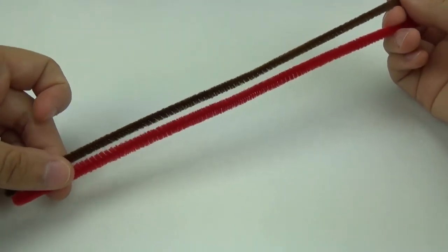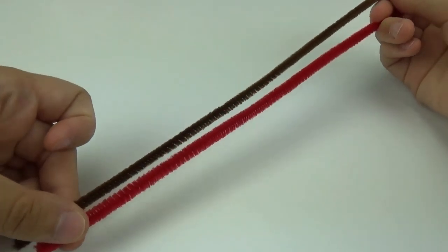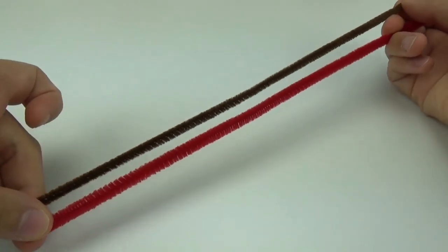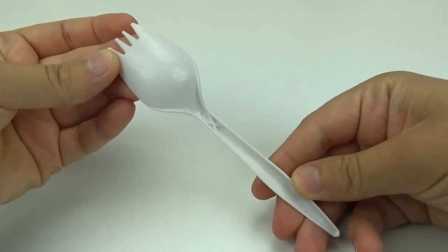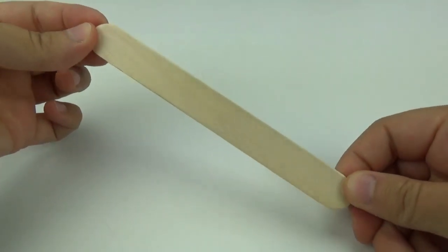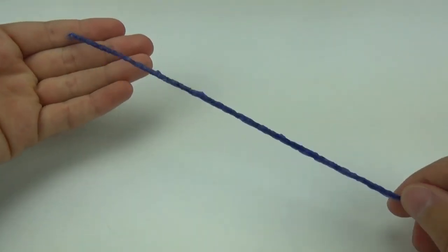Some of the items that you will need to create your own Forky's grandpa are a brown and red pipe cleaner, a plastic spork, one popsicle stick, a blue wax stick,